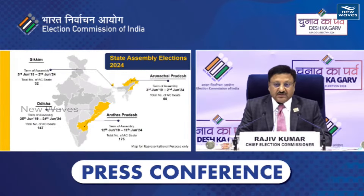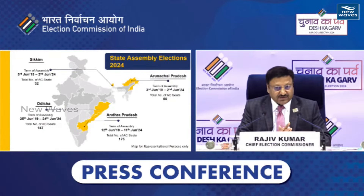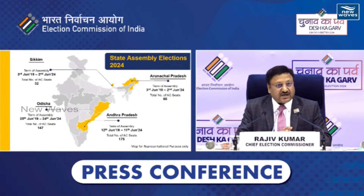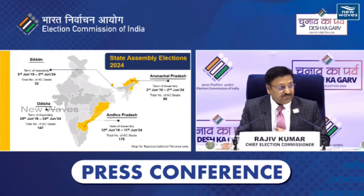Arunachal Pradesh on 2nd of June with 60 Assembly Constituencies, and Andhra Pradesh on 11th June with 175 Assembly Constituencies. These are the simultaneous elections to the Parliament — they will be held simultaneously.